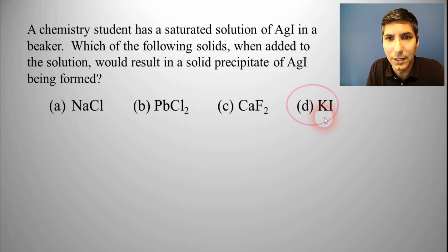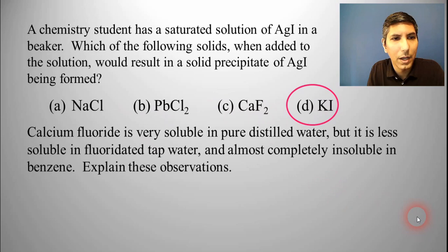Well, there's only one choice, isn't there? It's choice D, the potassium iodide. Those other three would not really work. Here's another question. Calcium fluoride is very soluble in pure distilled water, but it is less soluble in fluoridated tap water, and almost completely insoluble in benzene. Explain these observations.